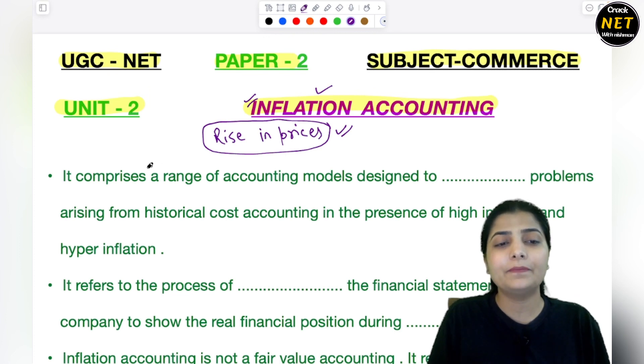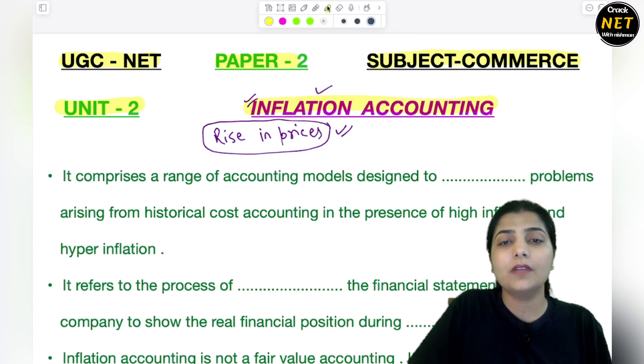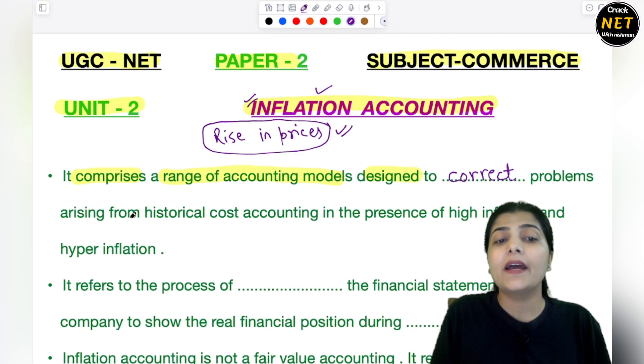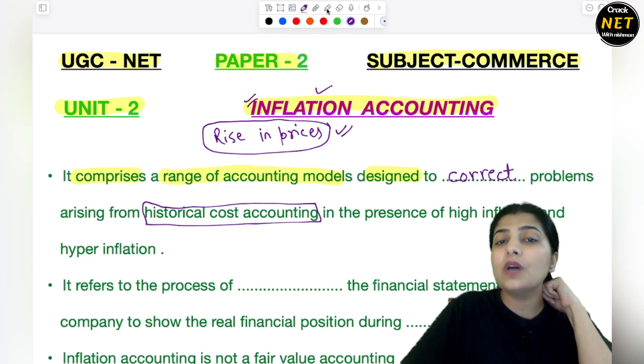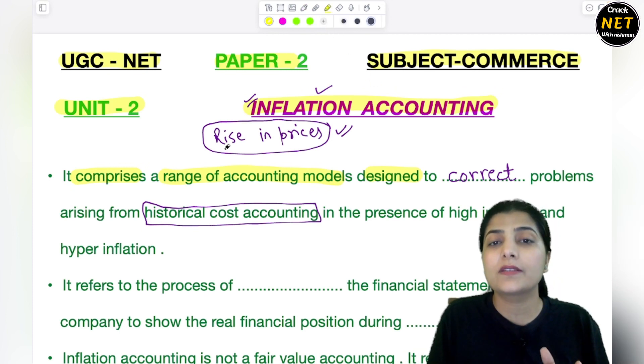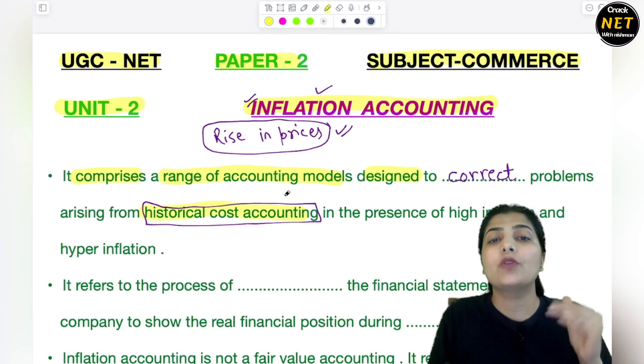Let's start today's session. Listen carefully. First of all, it comprises - Inflation Accounting comprises a range of accounting models that are designed to correct which problems? Problems arising from historical cost accounting. Your historical cost means the cost you recorded in history for assets and liabilities.